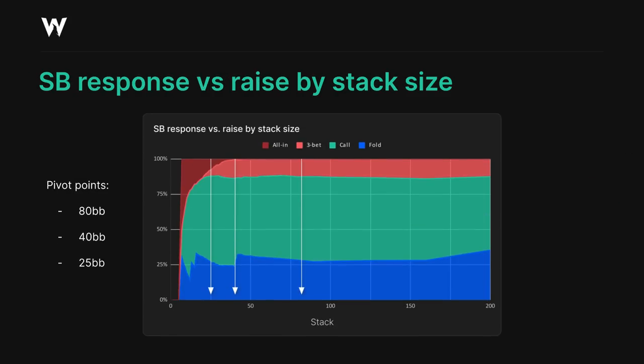For this node, we have 3 pivot points, at roughly 80 big blinds, 40 big blinds, and 25 big blinds. For the purposes of analysing our strategies here, I'm going to adapt our view of the sims to show the hand combos at full height, just so we can see them more clearly.